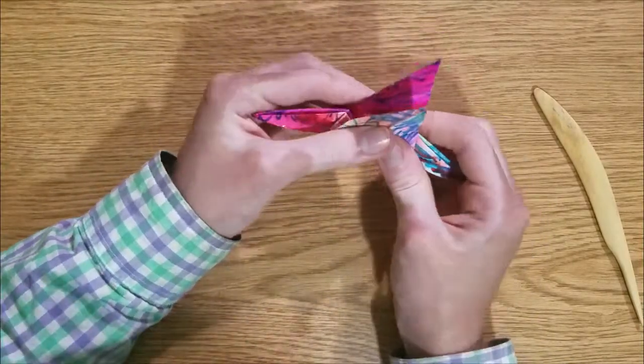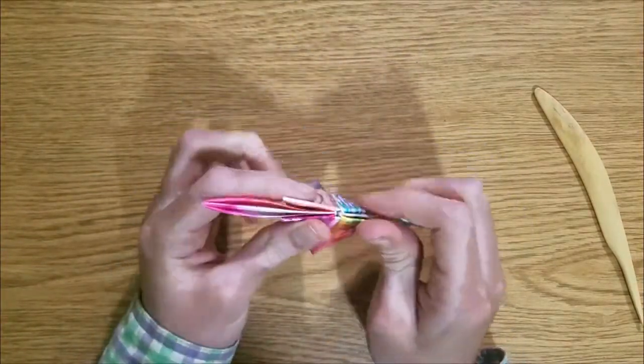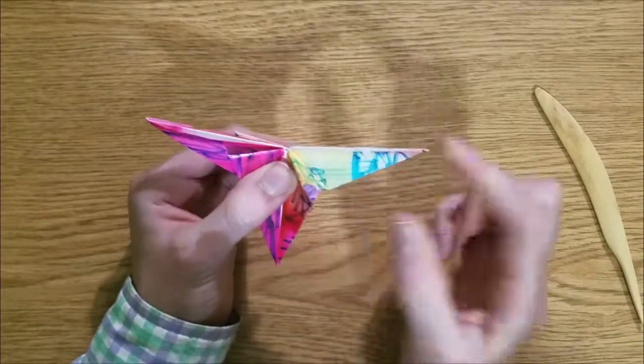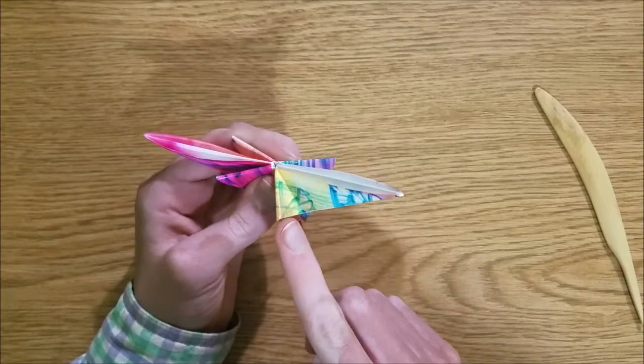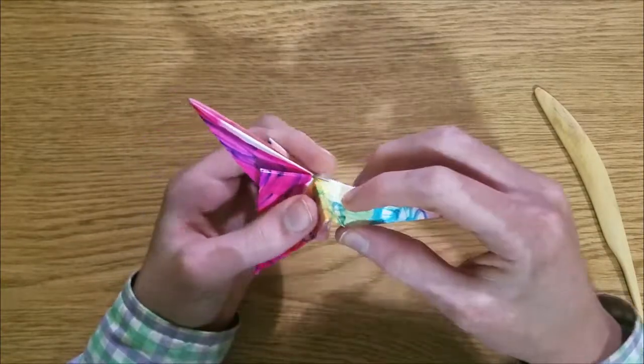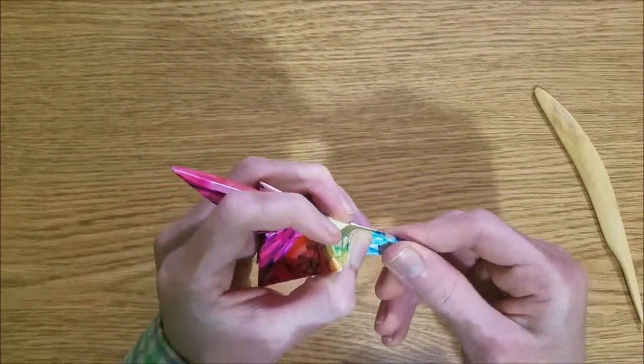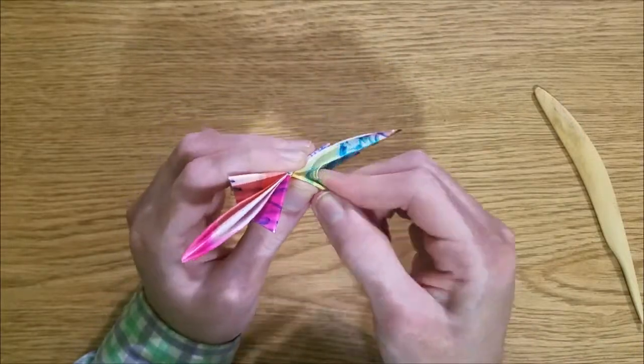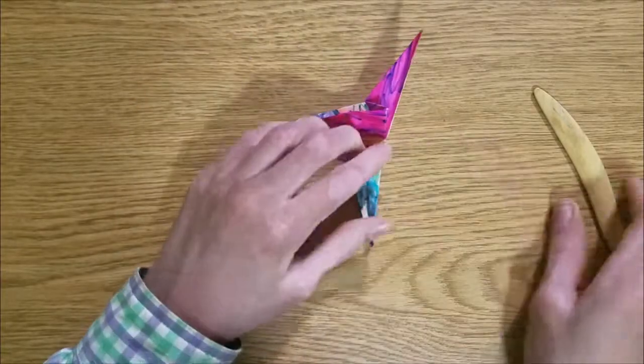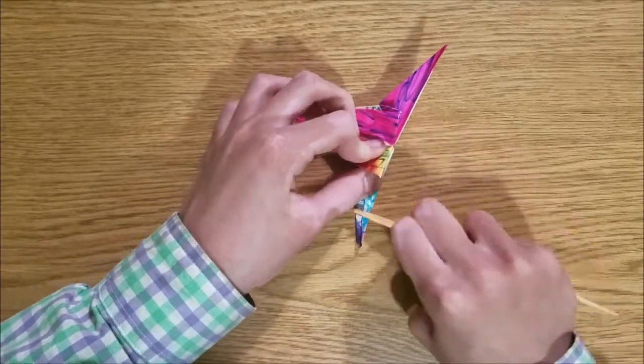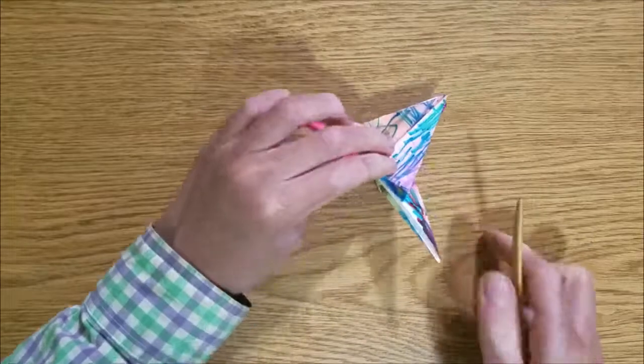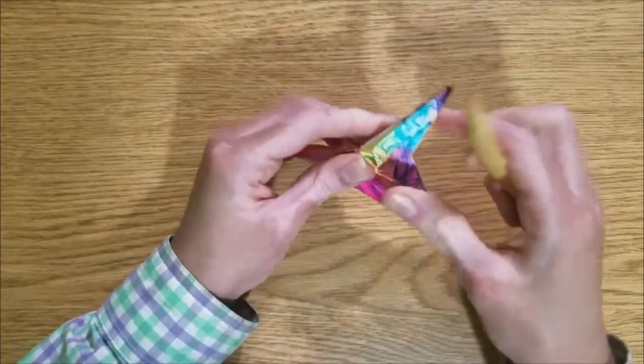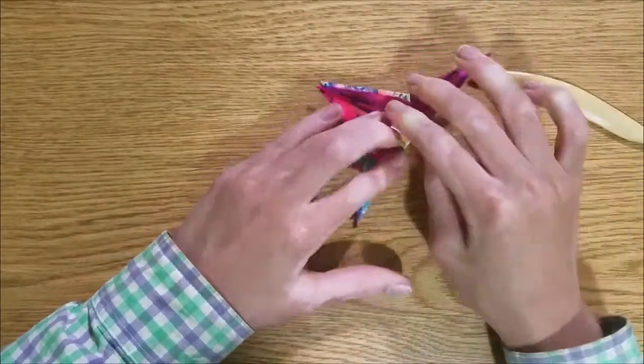Now what we're going to do is make some more inside reverse folds. So this is going to get really thick now. What we're going to do is open this layer a bit and fold this edge to this edge, and this edge to this edge, and this edge to this edge. There. And then this part to there. Hopefully you understood that. If you're a beginner, or maybe I'm overestimating how hard is these. Well, this is probably my easiest design anyway.